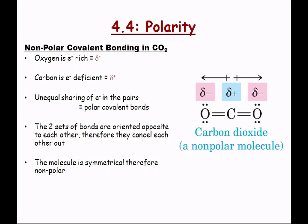A student points out that the electronegativity numbers given were off. The instructor acknowledges this — since an electronegativity table will be provided, students should write down the correct numbers. The correct difference for CO₂ should be 1.1.